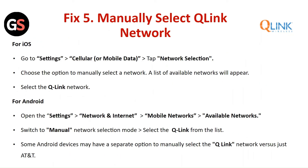Fix Five — Manually Select Q-Link Network: for iOS, go to Settings, select Cellular and tap on the Network section. Choose the option to manually select a network; a list of available networks will appear — select Q-Link. For Android, open Settings, go to Network and Internet and select Mobile Networks. Click on Available Networks, switch to Manual Network Selection Mode and select Q-Link from the list. Some Android devices may have separate options to manually select Q-Link versus AT&T.